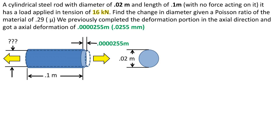Find the change in diameter given a Poisson ratio of the material of 0.29, which the Poisson ratio will be abbreviated as Greek letter mu.